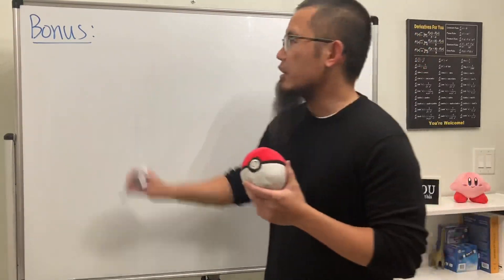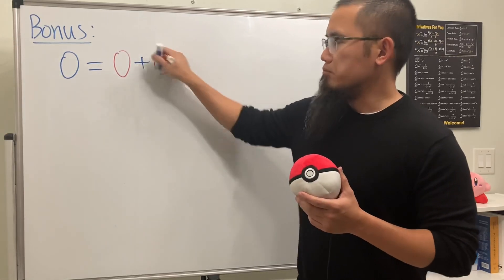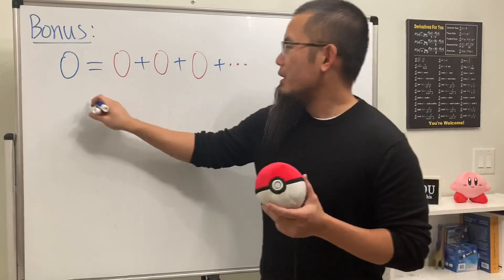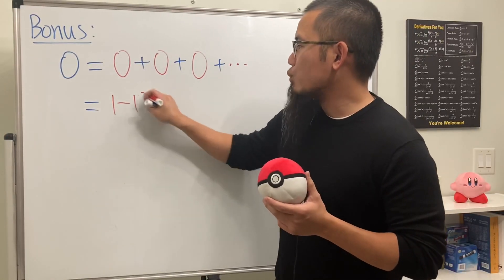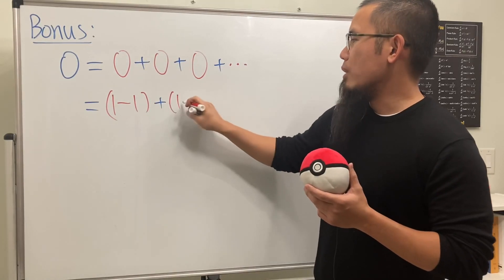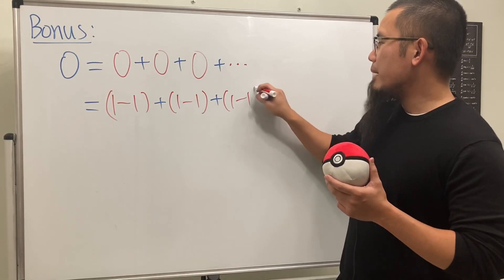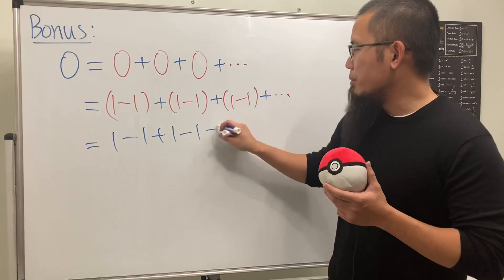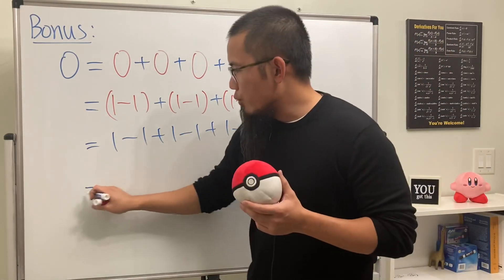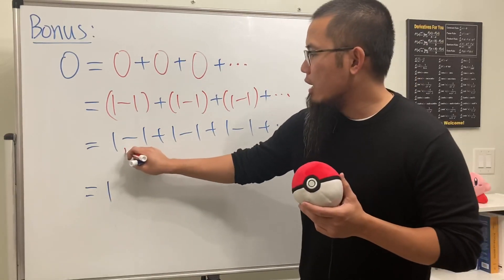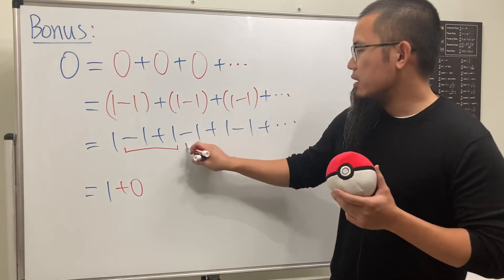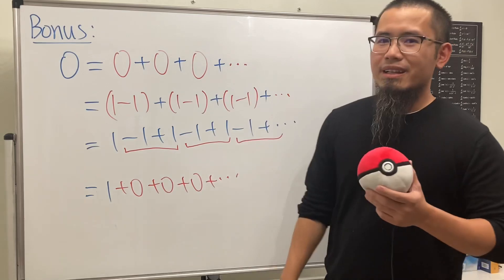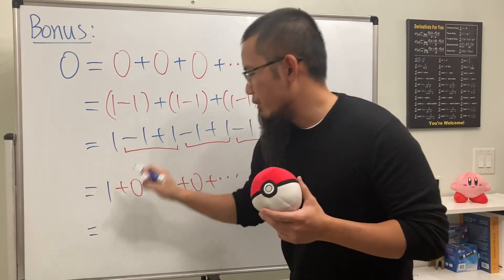Here's the bonus. Start with 0 = 0 + 0, and repeat infinitely. Since 1 - 1 = 0, replace each zero with (1 - 1). Removing all the parentheses gives 1 - 1 + 1 - 1 + 1 - 1 and so on. Keeping the first 1 and pairing the rest: (-1+1) = 0, (1-1) = 0, and so on. This appears to show that 0 equals 1 — a classic mathematical paradox.